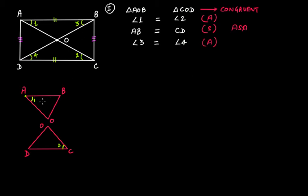If you look at angle 3, that is angle B of triangle AOB, and angle 4, that is angle D of triangle COD, these two triangles are congruent, so angle B is equal to angle D.